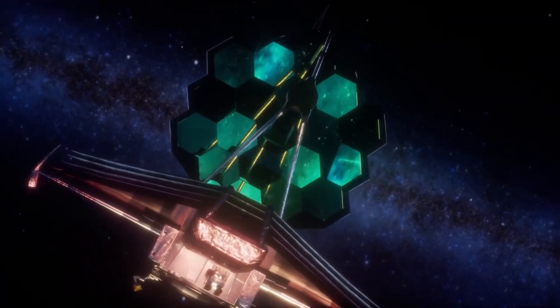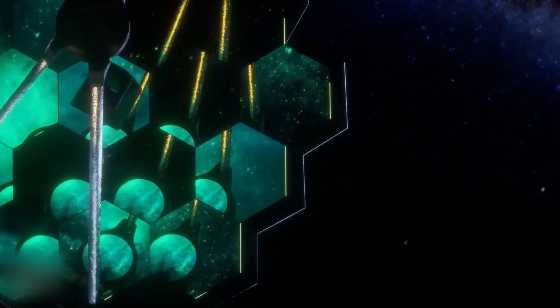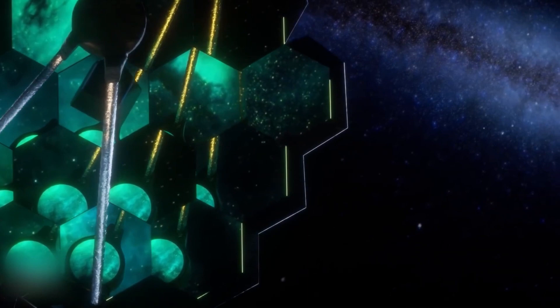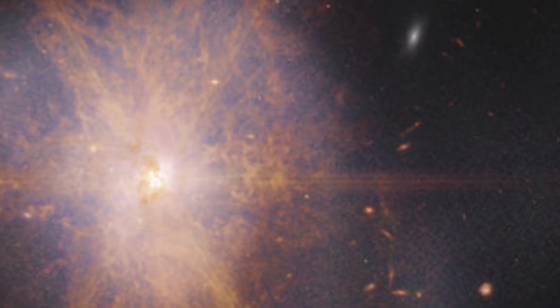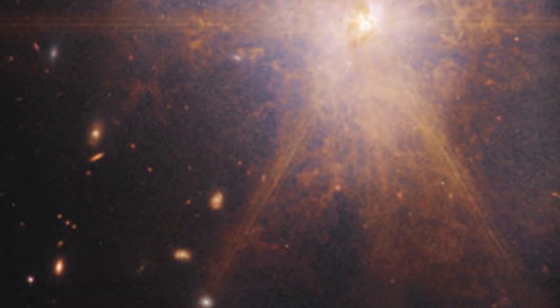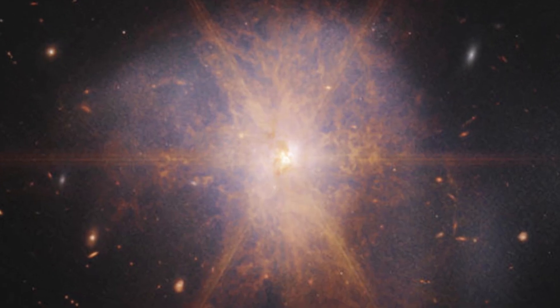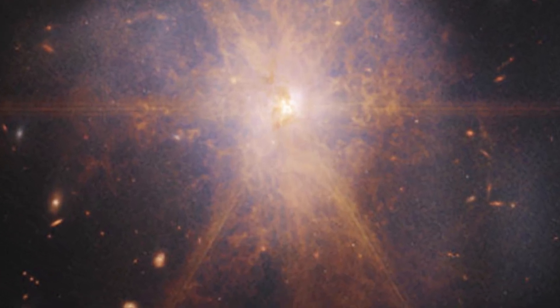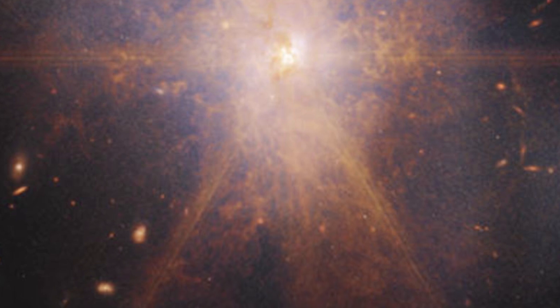This latest view from the James Webb Space Telescope shows an impressive galactic merger of the two galaxies. This image also shows faint tidal tails extending from the outskirts of the merger, indicating the gravitational pull between the two galaxies. Finally, the reddish and orange streams and filaments represent scattered organic materials in ARP-220.